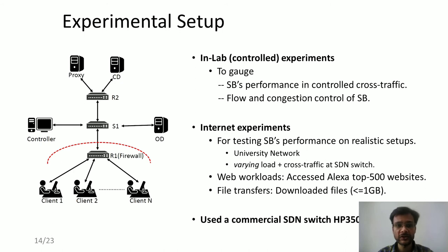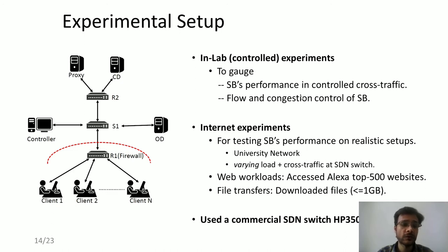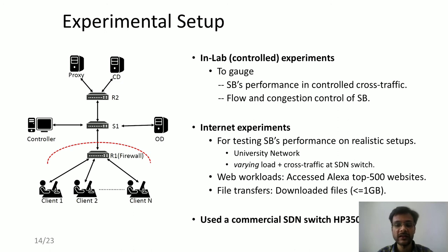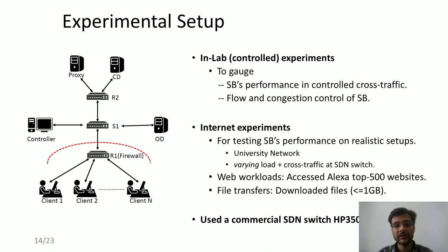We also performed an evaluation of Siege Breaker. As seen in the diagram, the setup includes various clients behind a firewall not allowed to access covert destination content, with an SDN switch managed by a controller after the firewall, and OD, CD, and proxy set up on the internet. Experiments were divided into two categories: in-lab experiments testing Siege Breaker's performance in the presence of controlled cross traffic and our flow and congestion control implementation, and internet experiments testing performance in realistic scenarios — including deployment in our university network with varied load and cross traffic. We used the commercial HP 3500YL SDN switch for all experiments.